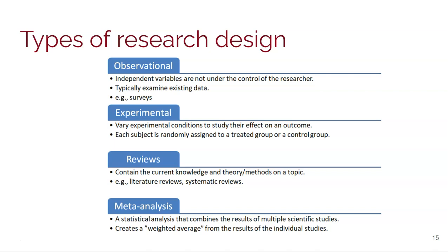Reviews are an assessment of the current knowledge and theory on a topic — these could be literature reviews or systematic reviews. Some of the most highly cited papers in the literature are review papers, because it's really helpful when someone synthesizes or assesses the current knowledge across lots of different studies. Someone is going out and synthesizing everything, doing all the work for you. Reading a review paper can give you a broad assessment of the research in a specific area.